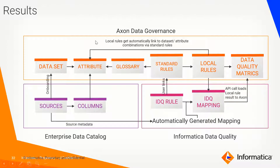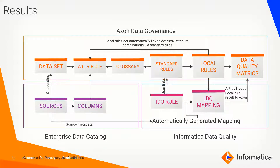Axon will load the results and load corresponding metrics onto the given glossary for a specific corresponding attribute. This is the complete journey — starting from the glossary, looking for actual physical metadata in the EDC world, bringing that information in the onboarding process, then creating one standard rule that triggers multiple local rules. These local rules act as soldiers that go and check the data at the columnar level. Eventually the metrics are loaded — for example, 10,000 rows found, 8,000 were good and matching the conditions, 2,000 didn't match. If there are hundreds of email fields, for each one there will be one local rule sent and results executed, visible on the Axon dashboard.